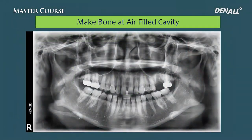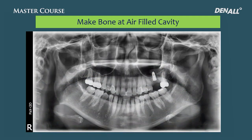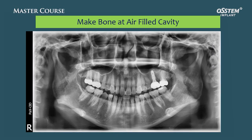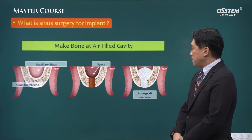Let me show you a different case. Extraction is done, and when the implant is placed without penetrating the sinus membrane, the sinus membrane is detached, bone graft is done, and implant is placed. After implant placement, loading is applied, and the sinus floor's outline is reformed within the sinus cavity. This is what we call sinus surgery.